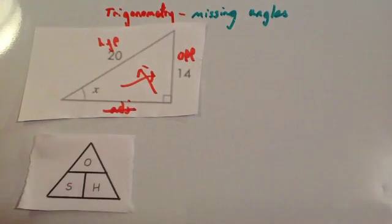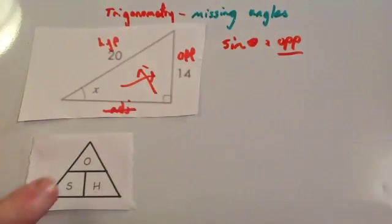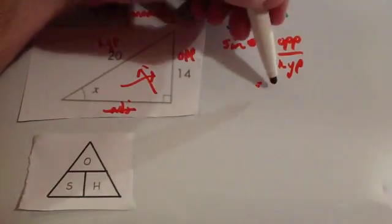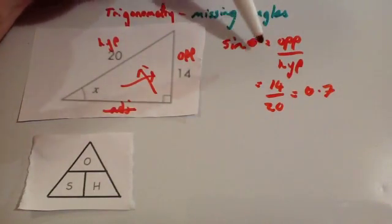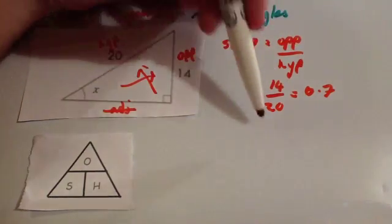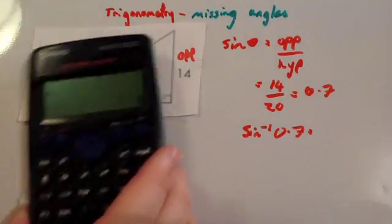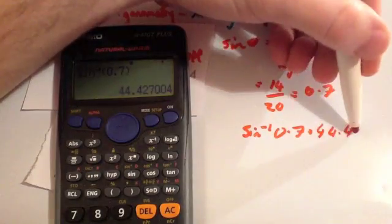Because we want to find out what the angle is, we cover up sine. Sine θ — remember, always follow sine, cos or tan with θ — equals opposite divided by hypotenuse. Substituting in the numbers: opposite is 14, divided by 20. When you do it in your calculator, you get 0.7. That's the sine of the angle. We want to find the angle, so we do the inverse sine of 0.7 — shift sine 0.7 — press equals, and you get 44.43 degrees.